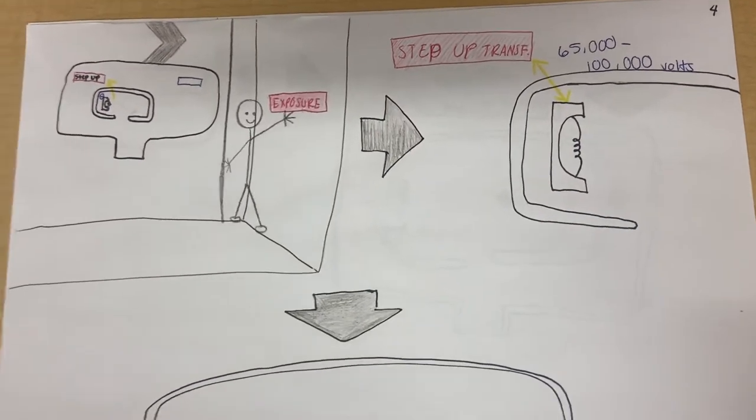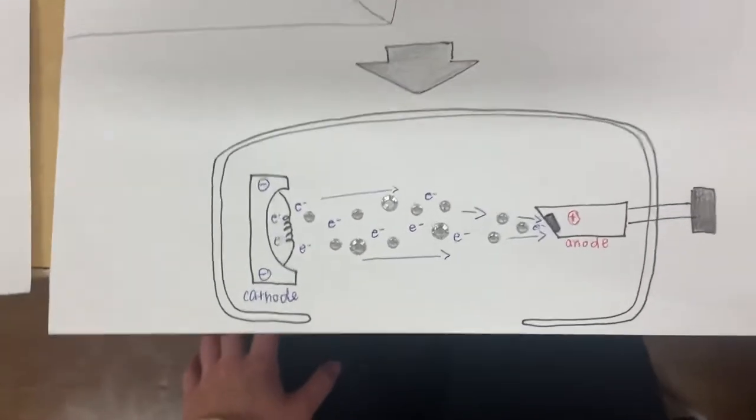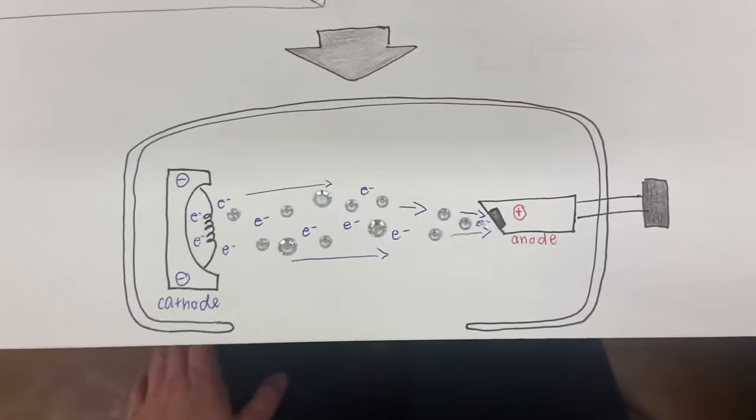The step-up transformer increases the voltage and will help propel the electrons towards the anode, as you can see here.